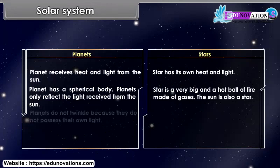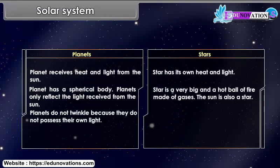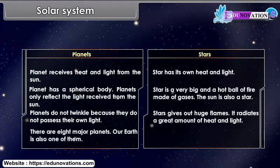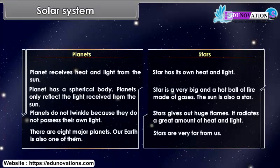Planets do not twinkle because they do not possess their own light. Stars give out huge flames and radiate a great amount of heat and light. There are eight major planets, and our Earth is also one of them. Stars are very far from us.